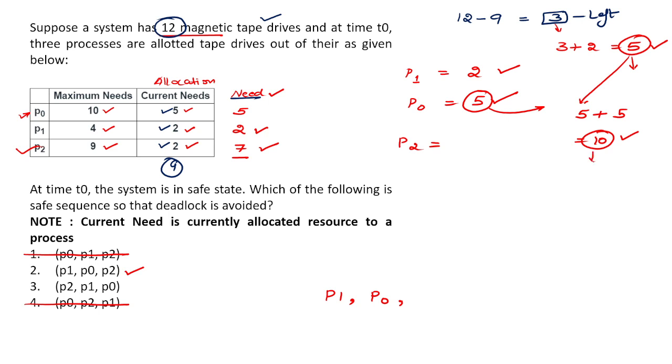After that we'll move to process P2. Its need is 7 and we have 10 resources, that means we can easily fulfill its requirements. So the safe sequence will be P1, P0, and P2. So this is the correct answer. This particular question is very, very, very important.